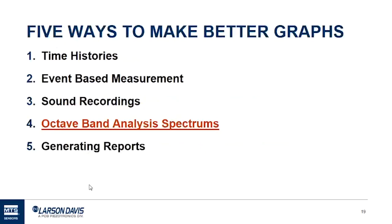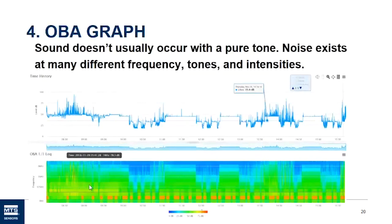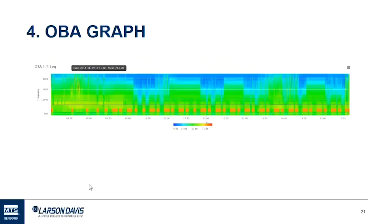Now we're going to go to octave band analysis spectrums — what we also call OBA. Sound doesn't usually occur with a pure tone; noise exists at many different frequency tones and intensities. Sometimes seeing just the decibel level is not enough to understand our data. The top graph has our time history graph — the decibel level of the Leq as it gets higher and lower — and then below at the bottom we have our OBA graph.